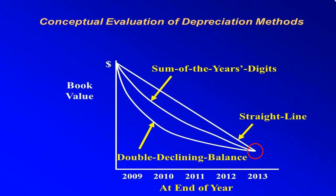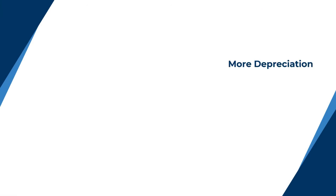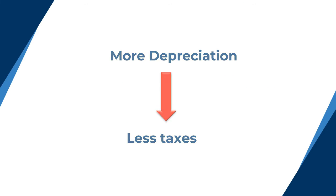The difference is that declining balance is an accelerated depreciation method. For example, if a company is trying to minimize the amount of tax it's paying, it is better to pay less tax earlier than later due to the time value of money. So, declining balance method is better for tax reductions — more depreciation, less taxes.